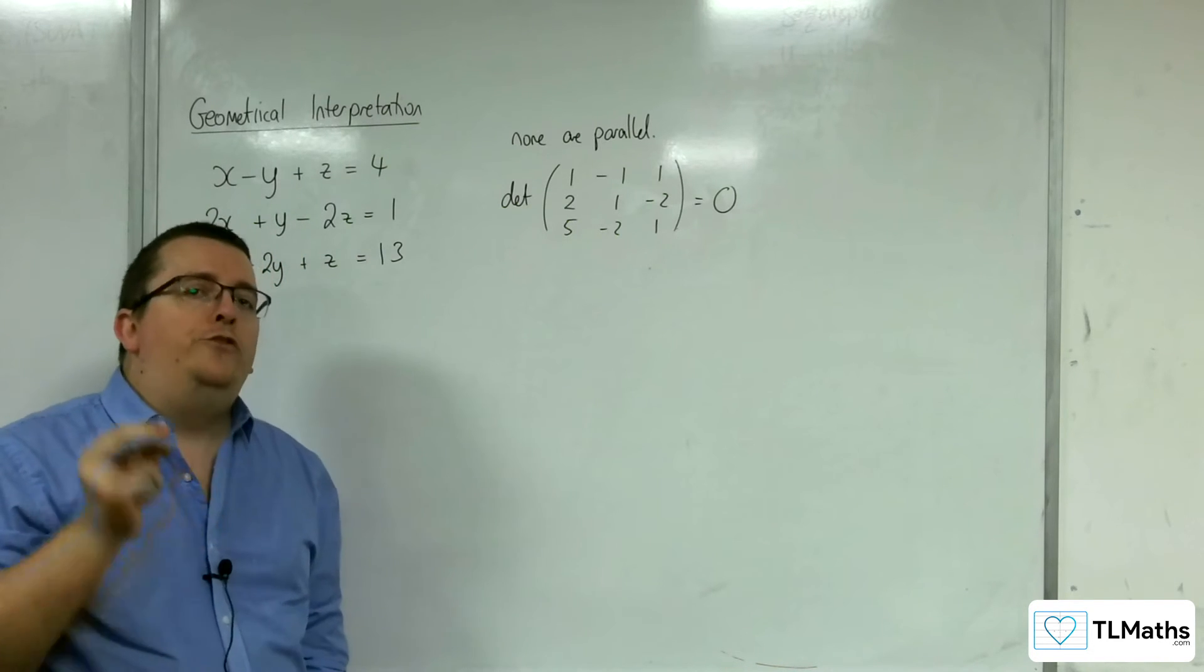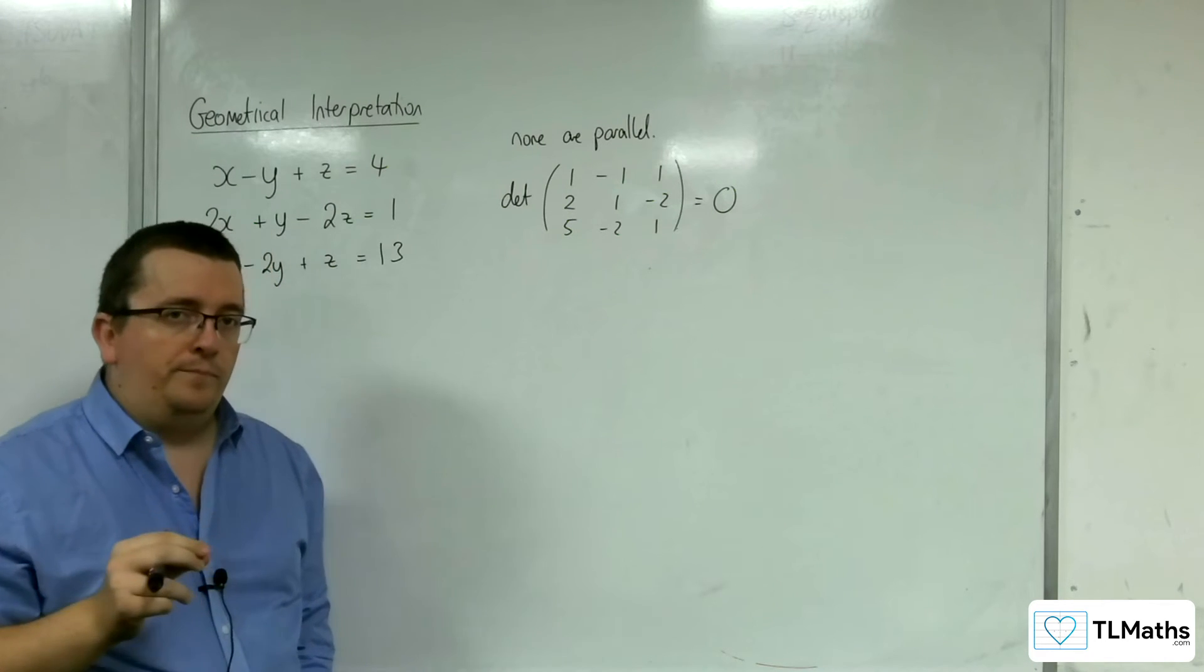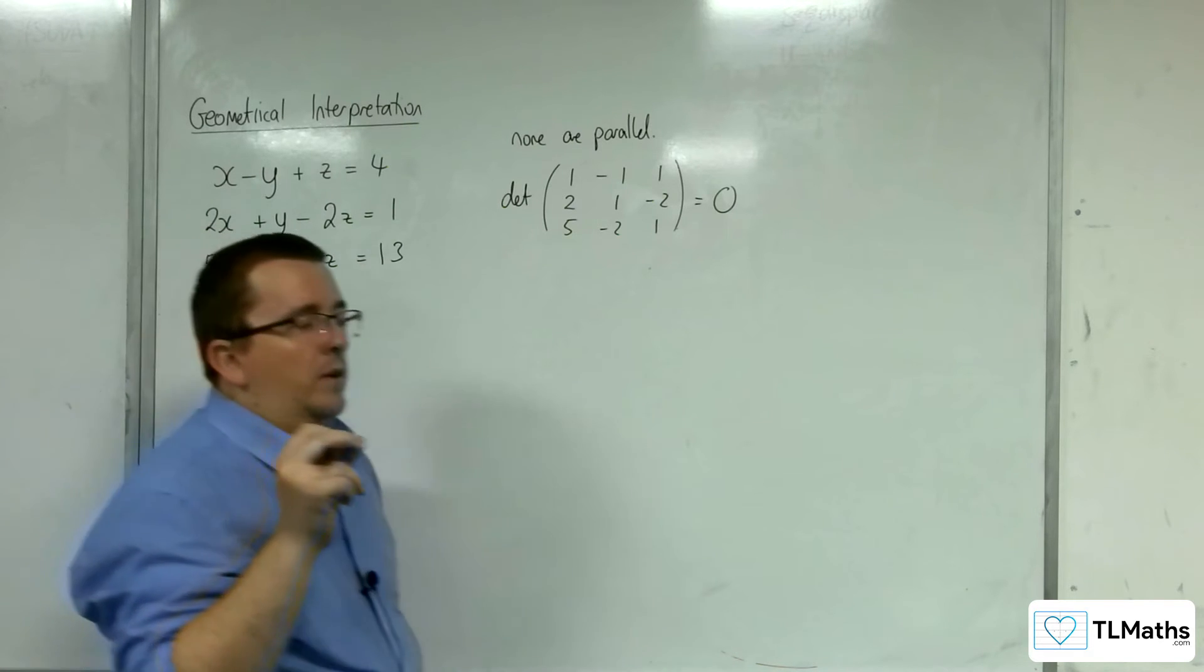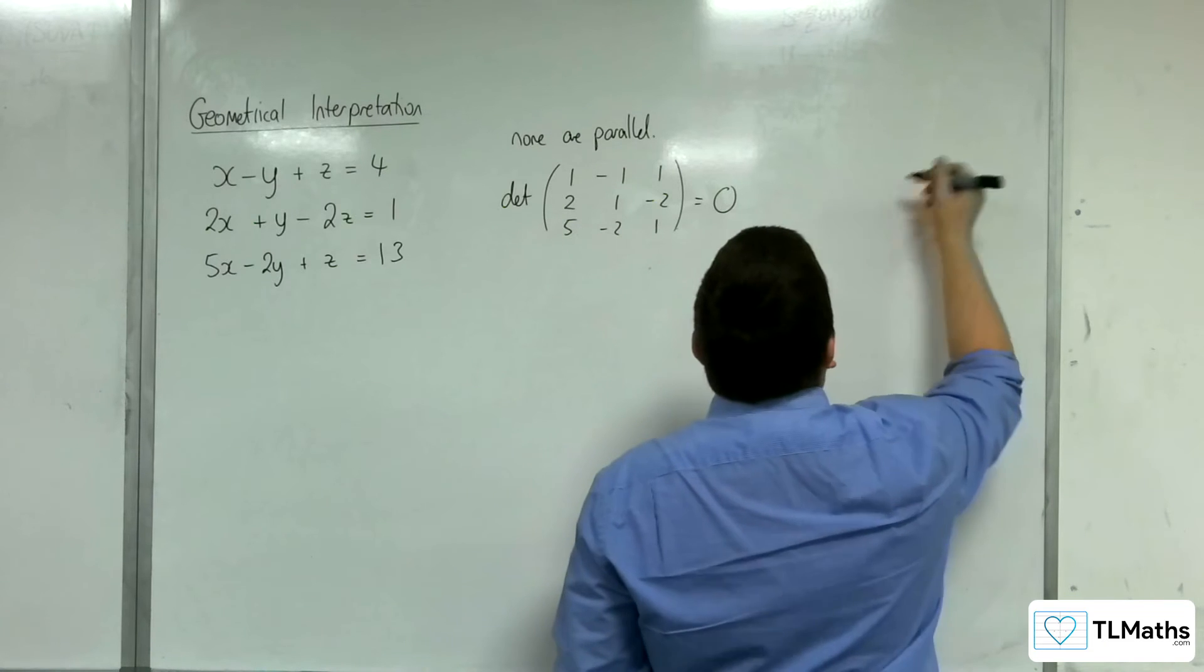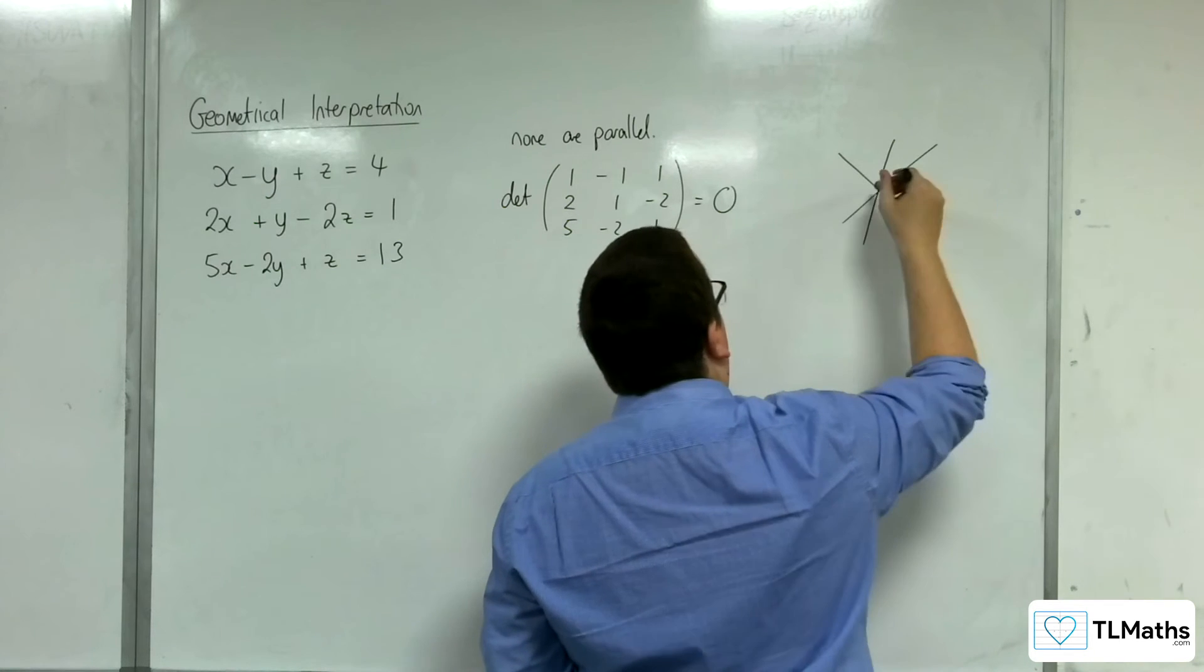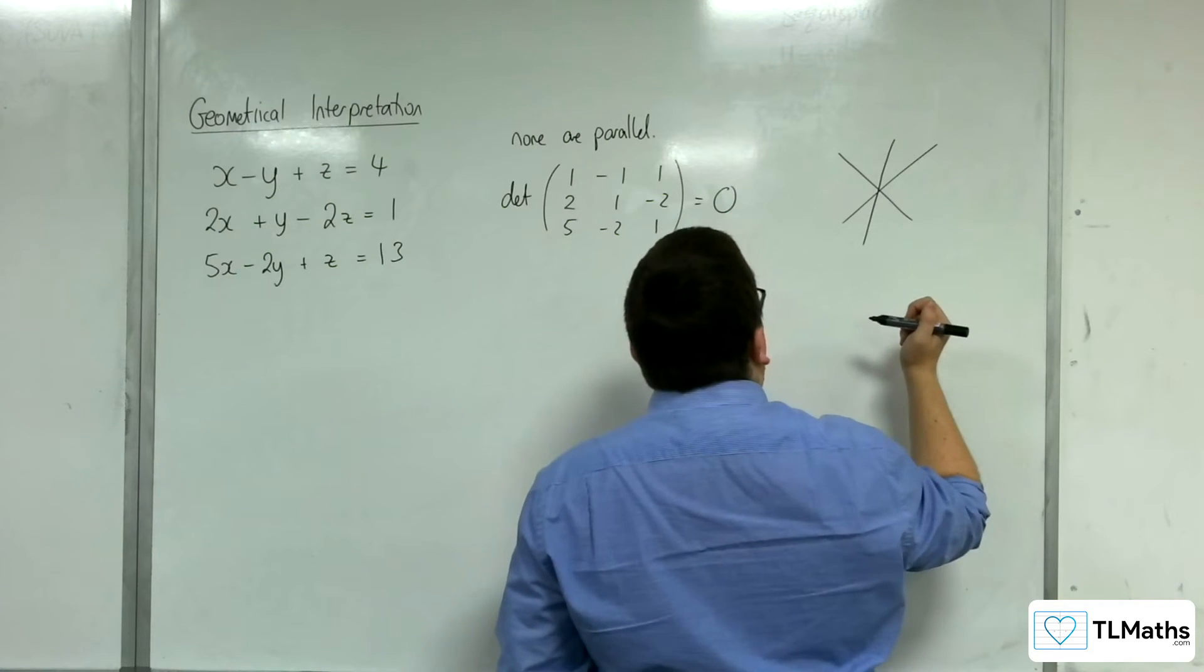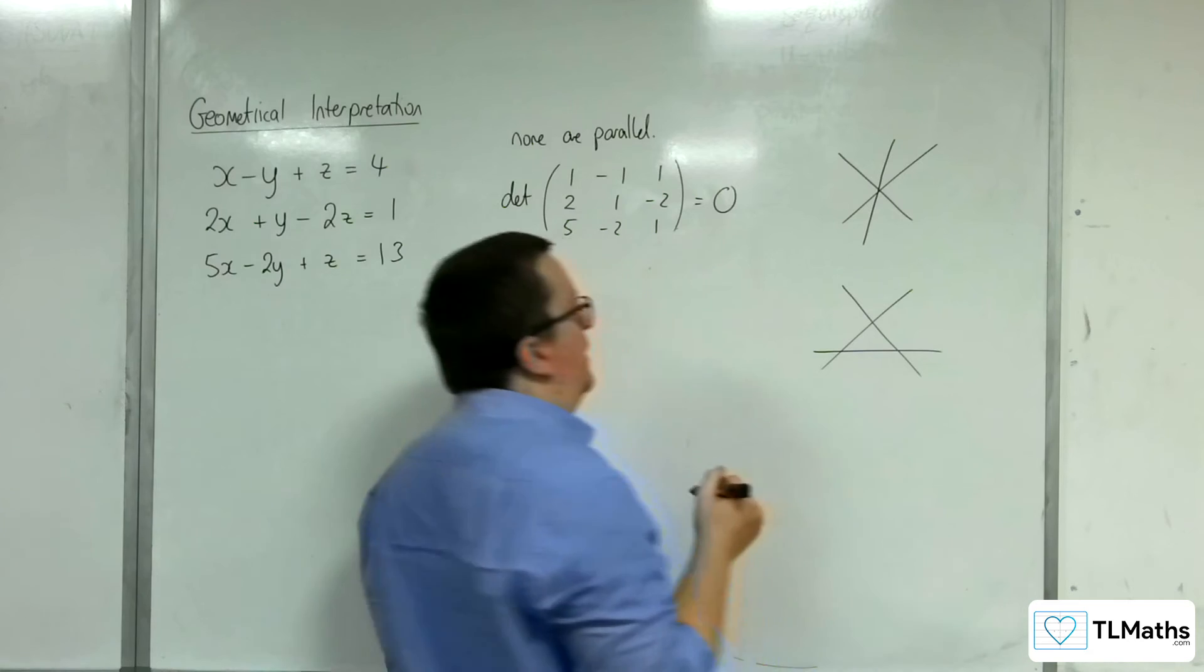Either you've got a sheaf or you've got a triangular prism. So remember, a sheaf is if you were looking at all three planes side on. Then the three planes would intersect at a line going through the board. Or you've got a triangular prism. Looking at them side on.